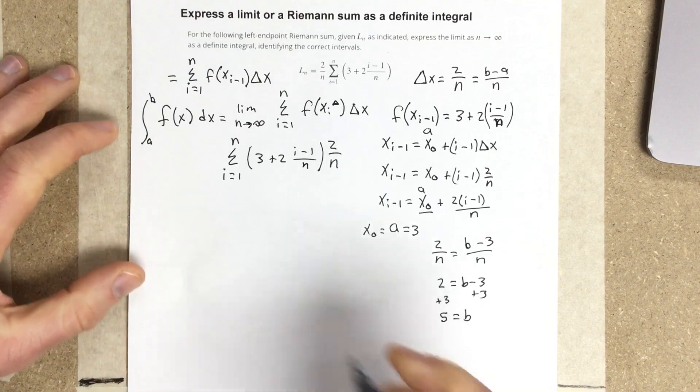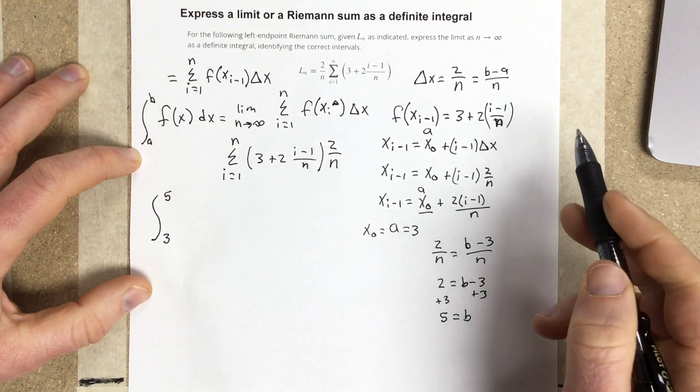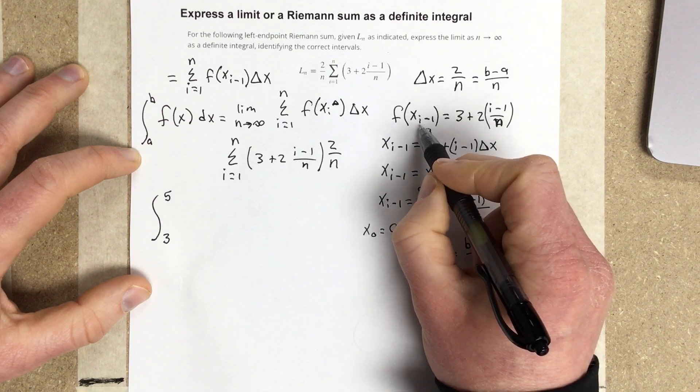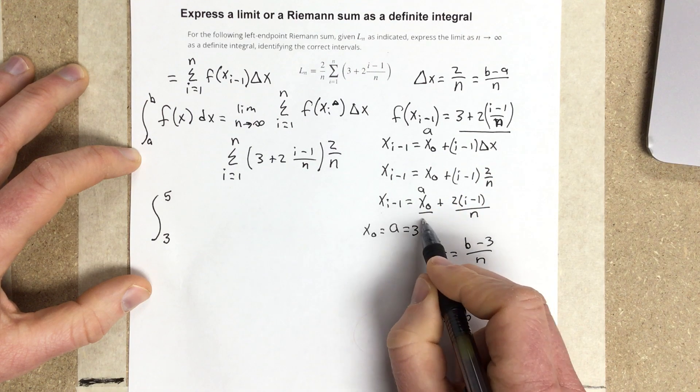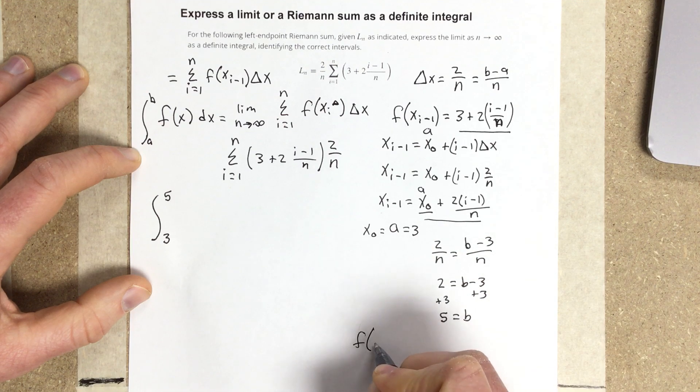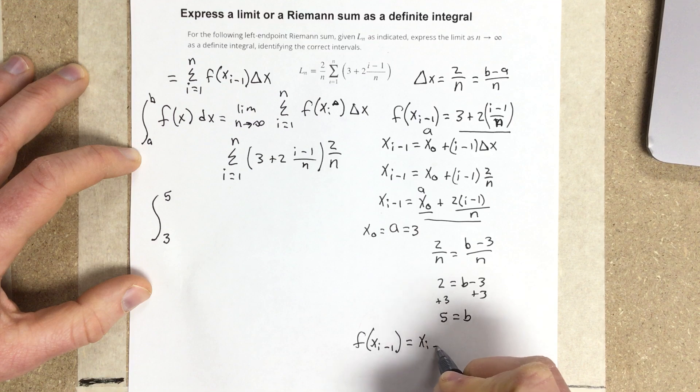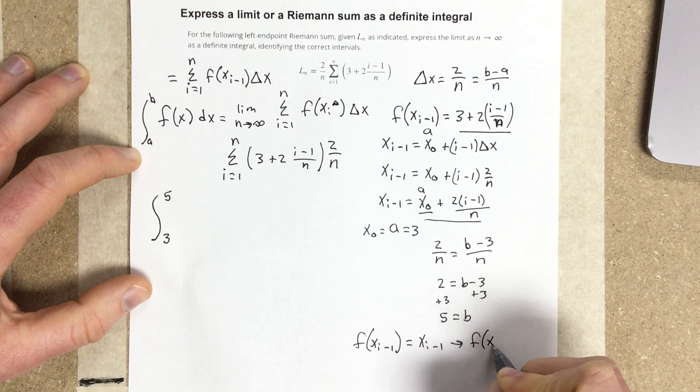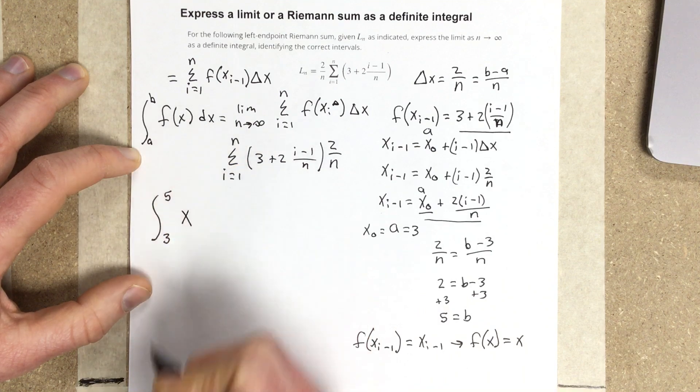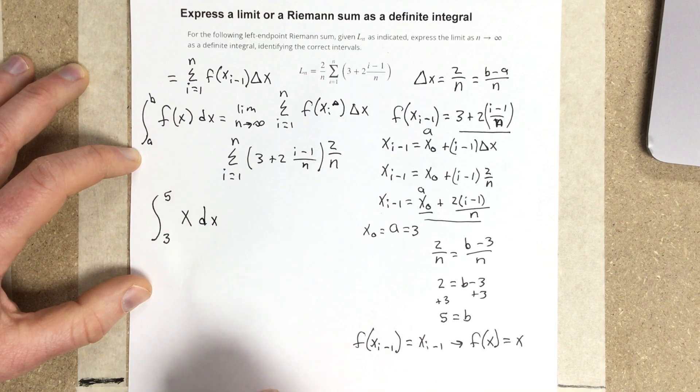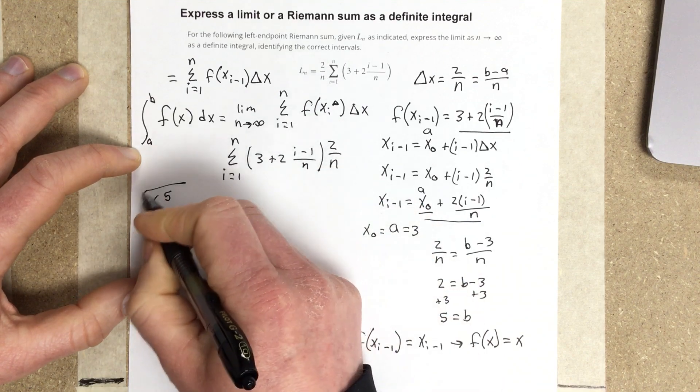So, we know our upper and lower bounds. Let's start writing that. Integral from 3 to 5, we now know. There was something else we should notice. We should notice that f(x_{i-1}), this piece right here, was actually equal to x_{i-1}. So, f(x_{i-1}) equals x_{i-1}, which implies that f(x) equals x. So, when we go to write this piece out, we can say that x is our function, and we can write dx here. And so, now we've taken this Riemann sum, and we've written this in integration form.